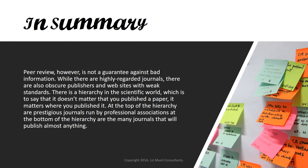In summary, peer review is not a guarantee against bad information. While there are highly regarded journals, there are also obscure publishers and websites with weak standards. There is a hierarchy in the scientific world — it doesn't matter if you published a paper, it matters where you published it. At the top of the hierarchy are prestigious journals run by professional associations, and at the bottom are the many journals that will publish almost anything. This concludes our lesson and presentation. Thank you so much for your time and attention.